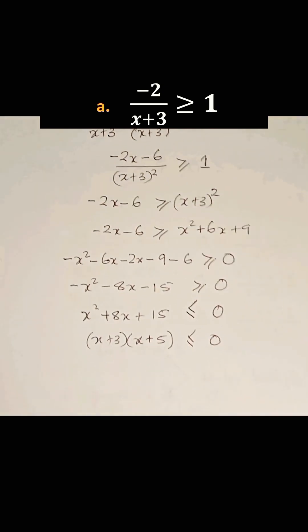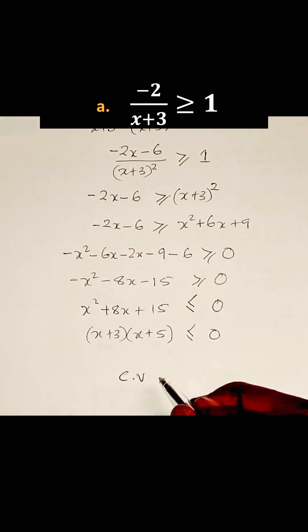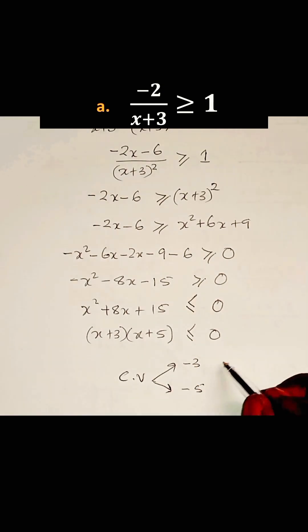Now we have the critical values. I shall call them CVs. So the critical values, they are -3 and -5. All of these are the x-intercepts.